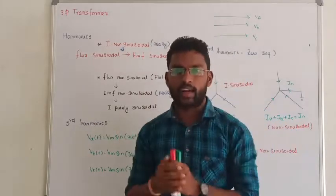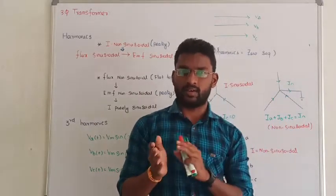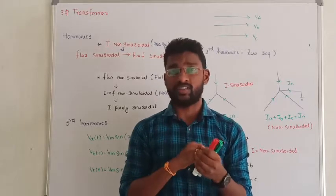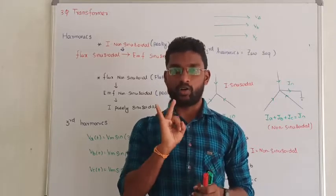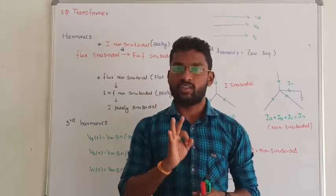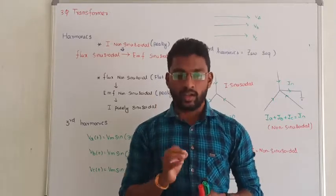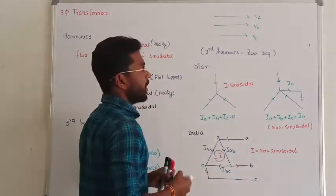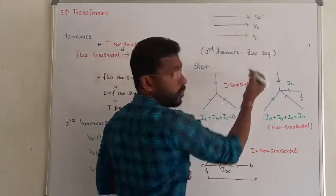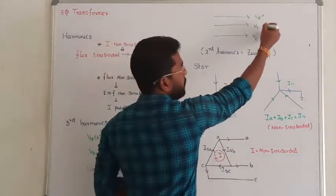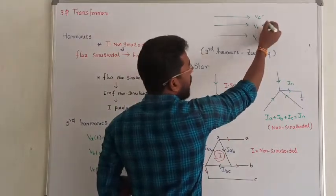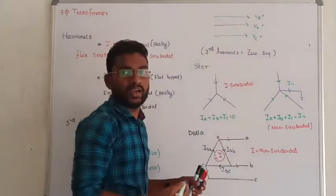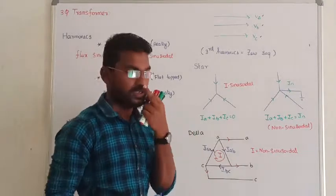In three-phase systems, we generally have three kinds of sequences: positive sequence, negative sequence, and zero sequence. In zero-sequence, we end up with three in-phase voltages — phase A, phase B, and phase C voltages all lie in-phase. That is called zero-sequence components.